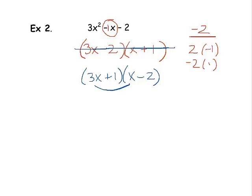Here I would get 3x squared minus 6x plus x minus 2. These two still check, but now these two are getting the negative 5x. That's not good either.